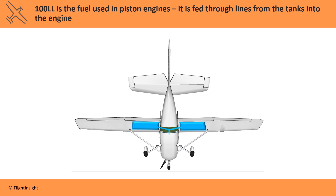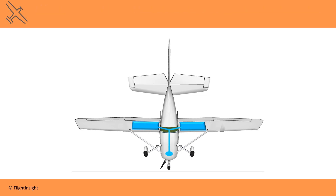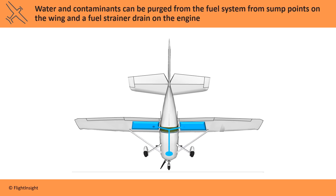The fuel is fed through fuel lines from the tanks into the intake of the engine. Water and contaminants can be purged from the fuel system from sump points on the wing and a fuel strainer drain on the engine.